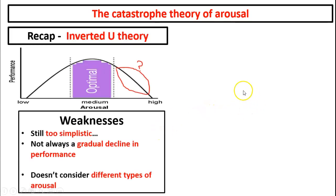Let's cast back to the inverted U theory. When we were criticising the inverted U theory, we were particularly interested in the idea of the gradual decline in performance. This theory was considered too simplistic in that when arousal got too high, it said there was a gradual decrease or decline in performance. Most people who have taken part in sport know that when arousal goes too high, it's very rare that there's a gradual decline in performance — it is usually some kind of disaster where everything goes wrong. So that's the key weakness.